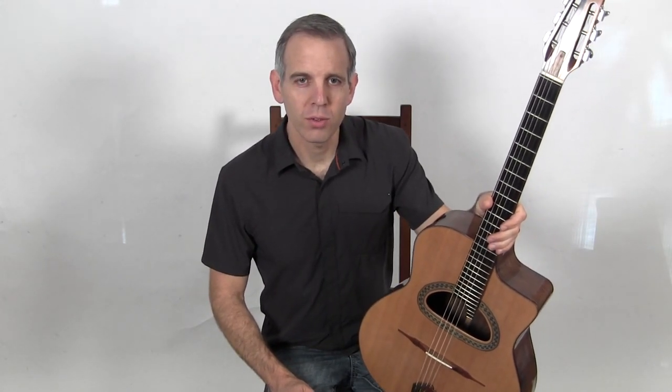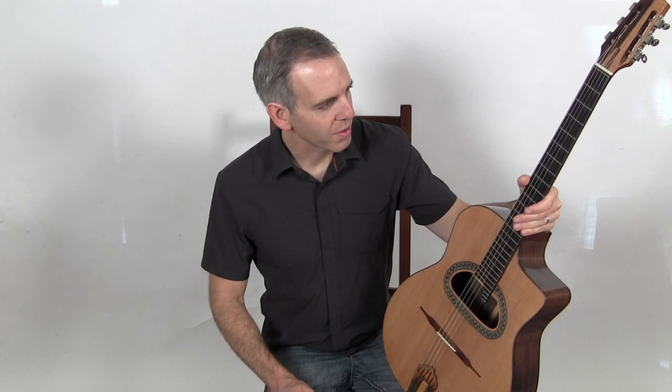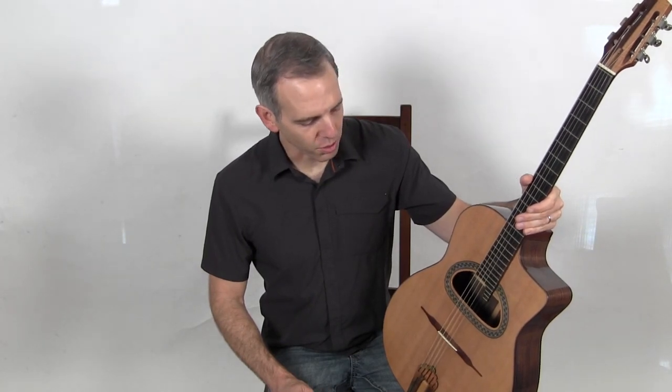Nyberg was a protege of the Canadian luthier Michael Dunn and this guitar shows much of the influence from Michael Dunn's work.